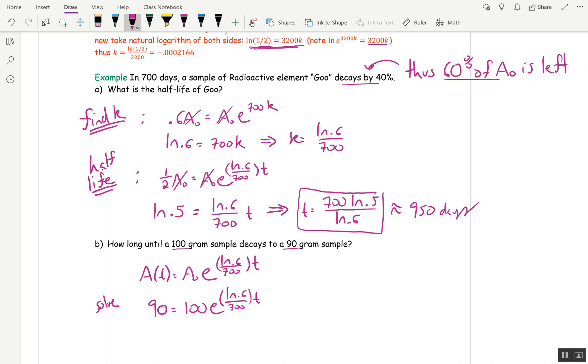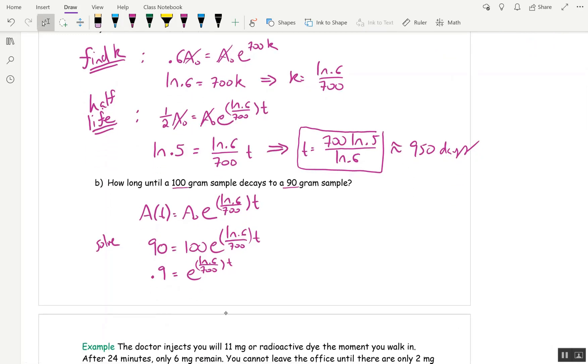Divide both sides by 100 to get on this side, 9 over 10, which is 0.9, is e to the ln of 0.6 over 700 times t. Now take natural log of both sides. ln of 0.9 is ln of 0.6 over 700 times t. Multiply both sides by the reciprocal of the fraction you see on the right.